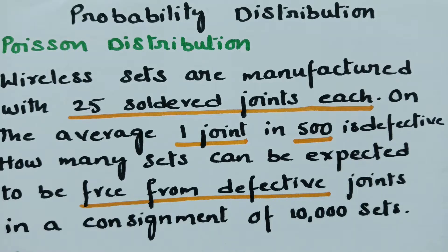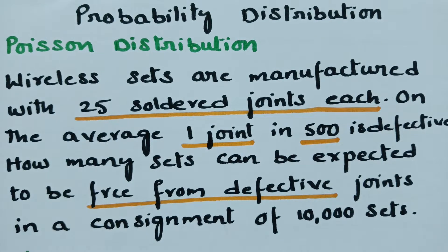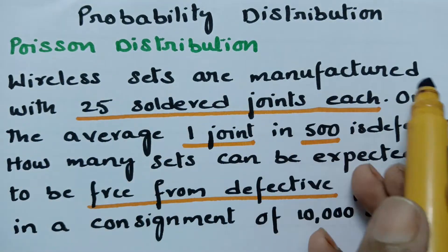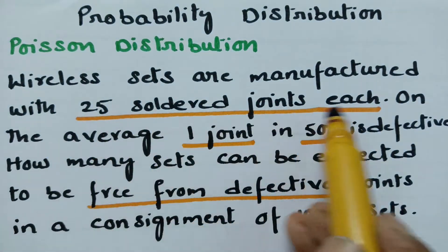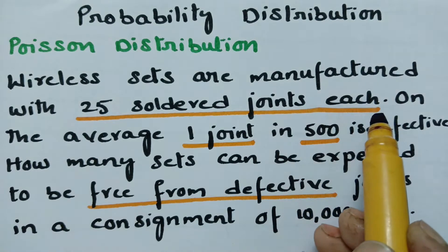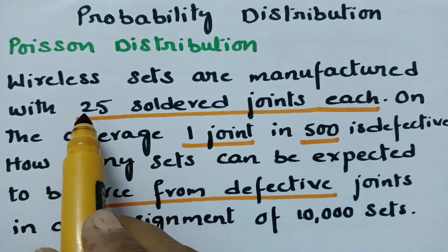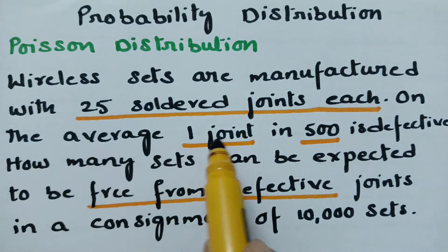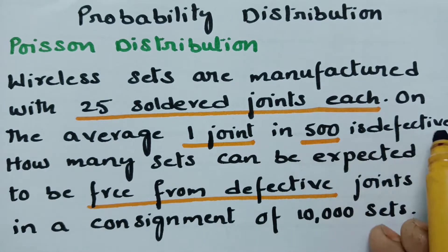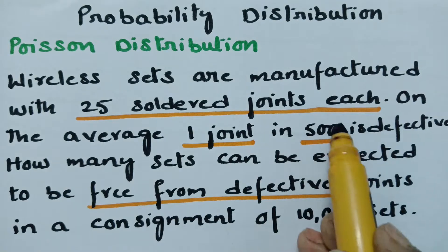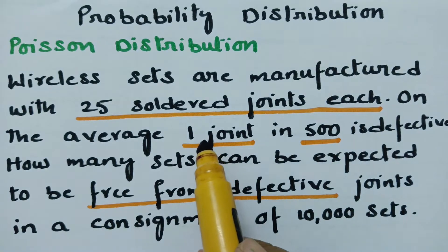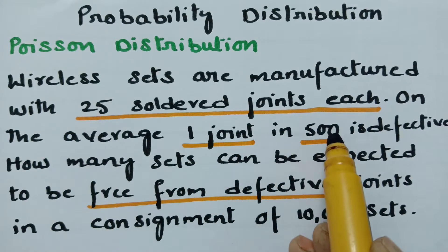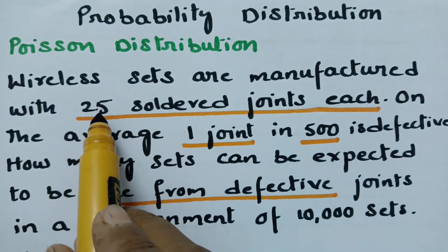Today's video is on Poisson distribution. We are going to discuss a problem: wireless sets are manufactured with 25 soldered joints each. The number of joints N is given as 25. On the average, one joint in 500 is defective, so among 500 one is defective. The probability P is equal to 1 by 500, whereas N is equal to 25.